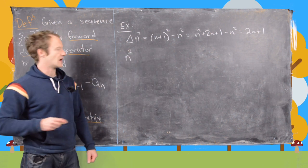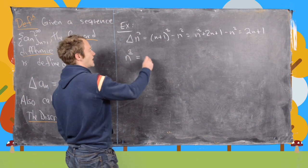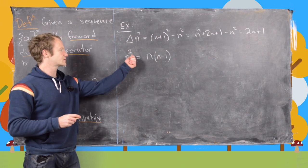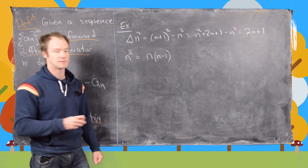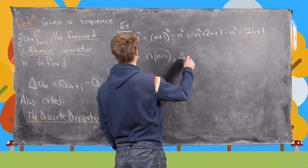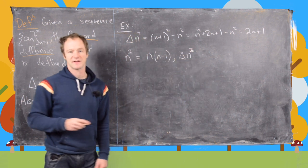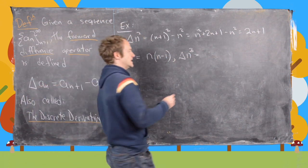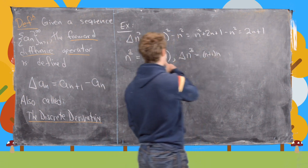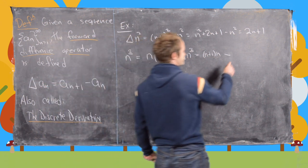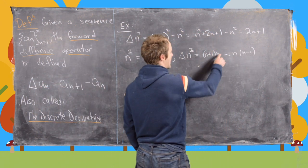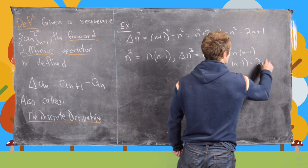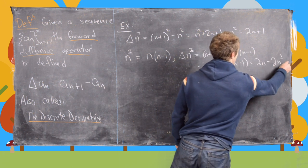We define n to the underlined power of two — called the falling power — as n times (n minus 1). Then the forward difference operator of this second falling power equals (n+1)·n minus n·(n-1). Factoring out n, we're left with (n+1) minus (n-1), which equals 2n — and that's exactly 2 times n to the first falling power.